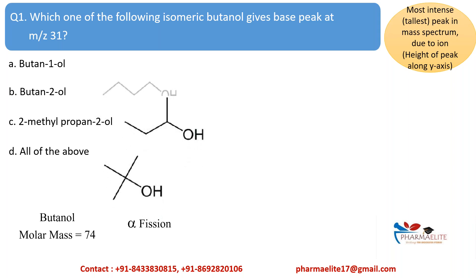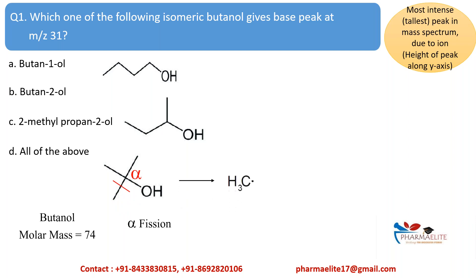Let us start with option C: 2-methylpropan-2-ol, which is a tertiary alcohol. The alpha carbon is attached to three methyl groups. So fragmentation can take place at any of these bonds to give a methyl radical of molar mass 15, and the remaining part of the molecule will give a peak at 59 — that is, 15 subtracted from 74.